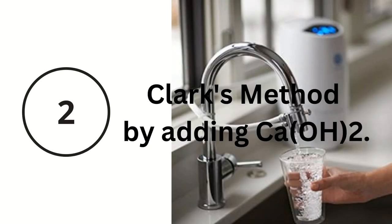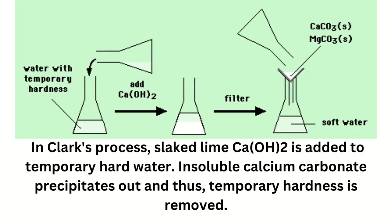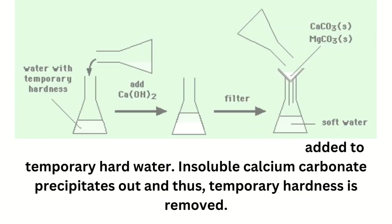Method 2: Clark's method, by adding calcium hydroxide. In Clark's process, slaked lime — calcium hydroxide — is added to temporary hard water. Insoluble calcium carbonate precipitates out and thus temporary hardness is removed.